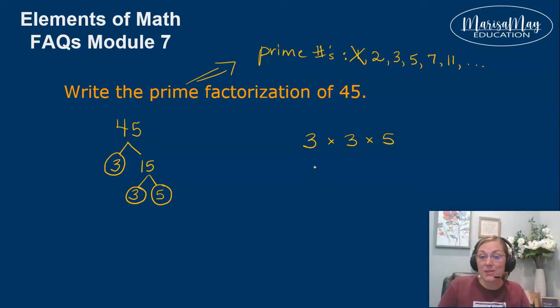Or if you want to write it with exponents, you've got two 3s here. So you've got 3 to the second times 5. And that is my prime factorization of 45.